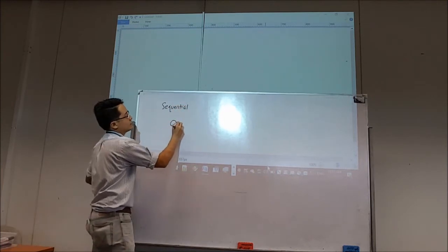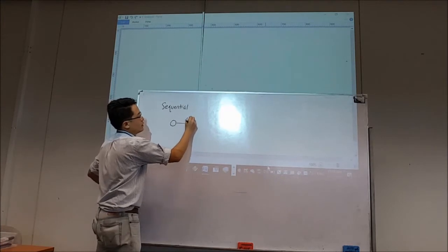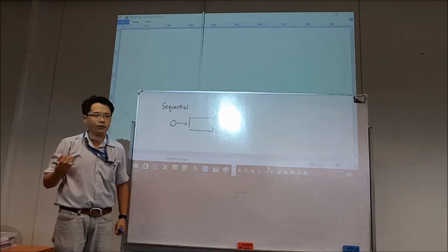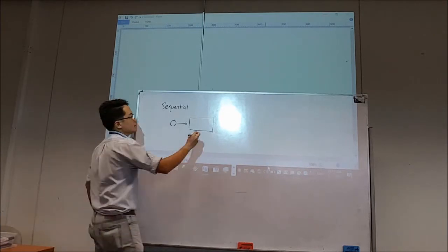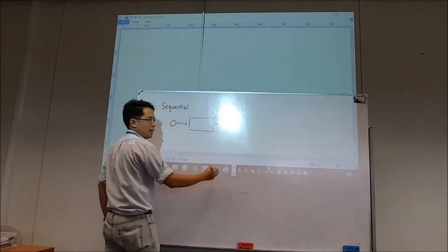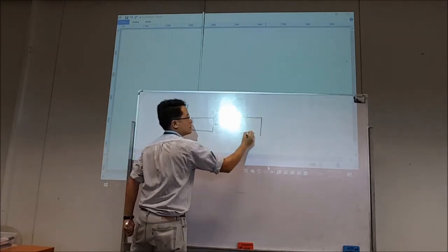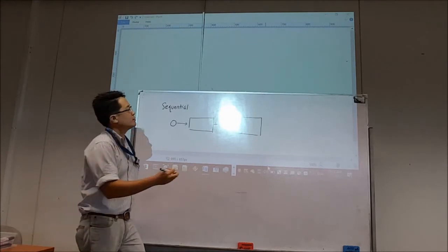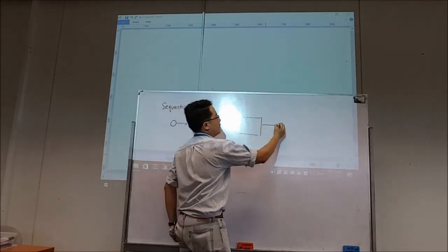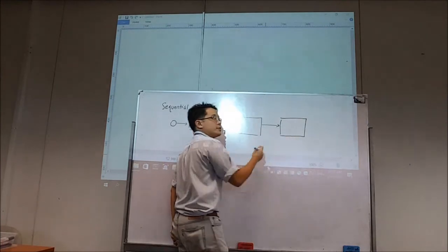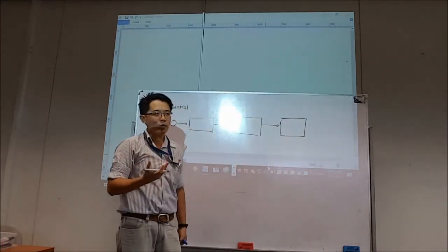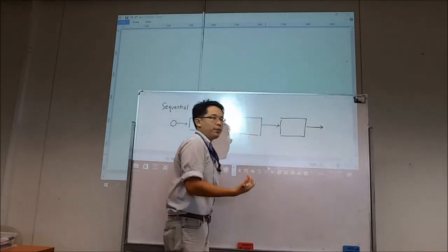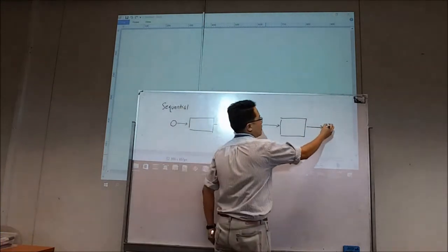This indicates the starting point. The first process, probably taking input from the users. Another process, which processes the inputs from the user. And finally, a process to display the output that has been computed. And the return statement in a program indicates the end of the program.